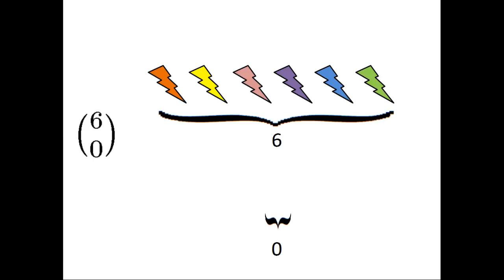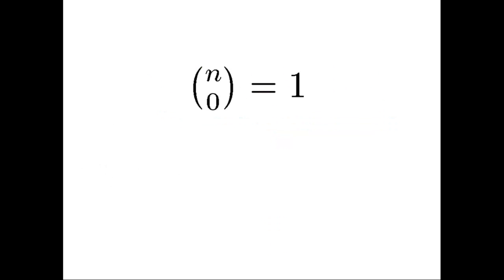Now, let's consider six choose zero. This equals the number of ways to choose zero objects from six objects. Clearly, there's only one way of doing that, which is choosing none of the objects. Hence, six choose zero equals one, and in general, n choose zero equals one, and therefore, n choose n equals one from the previous identity.